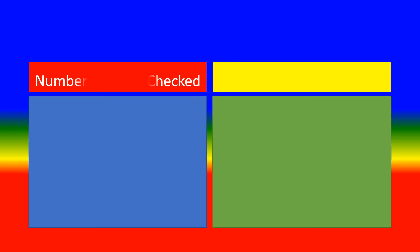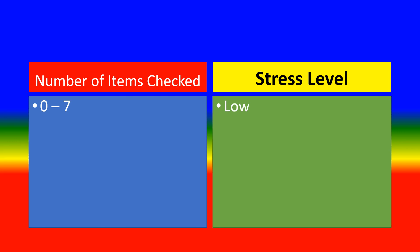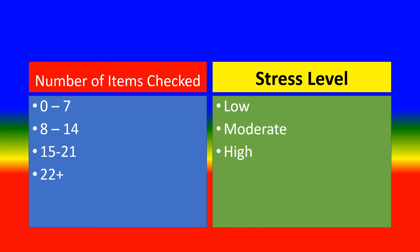Number of items checked — Stress level scoring: 0 to 7 symptoms: Low stress level. 8 to 14 symptoms: Moderate stress level. 15 to 21 symptoms: High stress level. 22 or more symptoms: Very, very high stress level.